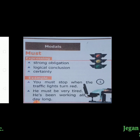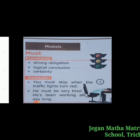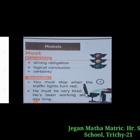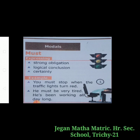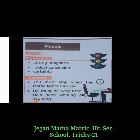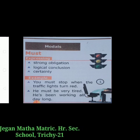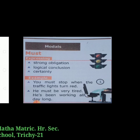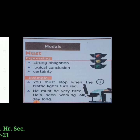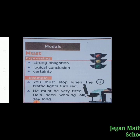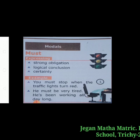For example: You must stop when the traffic lights turn red. We must obey our parents — obligation or necessity. You must finish your assignment by tomorrow — compulsion. She should have reached home by now — possibility.